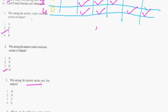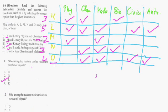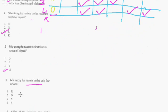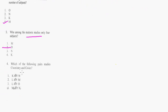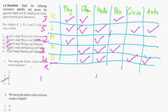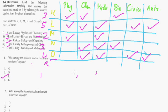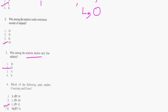Who among the students studies only 4 subjects? O is studying exactly 4 subjects, so the answer to this question is O. Which of the following pairs study Chemistry and Civics? Let's see who are studying Chemistry. K is studying Chemistry but not Civics. L is studying Chemistry and Civics both, so first one is L. M is studying Chemistry not Civics. N is studying Chemistry but not Civics. And O is studying both Chemistry and Civics. So next one is O. Here L and O are there, so the answer is option 3.